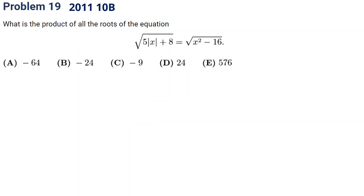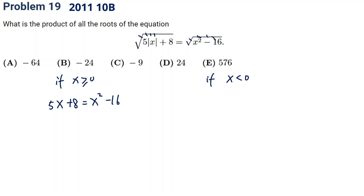Now let's look at a real question from 2021, problem 19. We discuss two cases. If x is greater than or equal to zero, we can cancel the square root on both sides, giving 5x plus 8 equal to x squared minus 16. If x is smaller than zero, the absolute value becomes negative x, so it's negative 5x plus 8 equal to x squared minus 16.